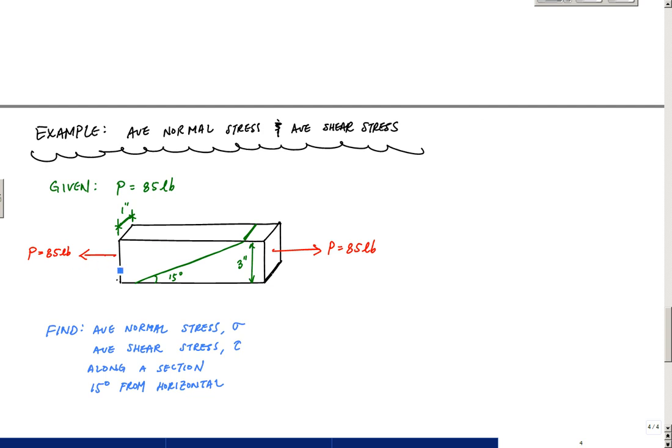I've got here in this bar 85 pounds being applied through the center of the cross-section, and the cross-section has dimensions of 1 inch by 3 inches. What I want to do is find the average normal stress, sigma, which is the normal force divided by the cross-sectional area that normal force is acting on, and then the average shear stress, which is just V over A as well.